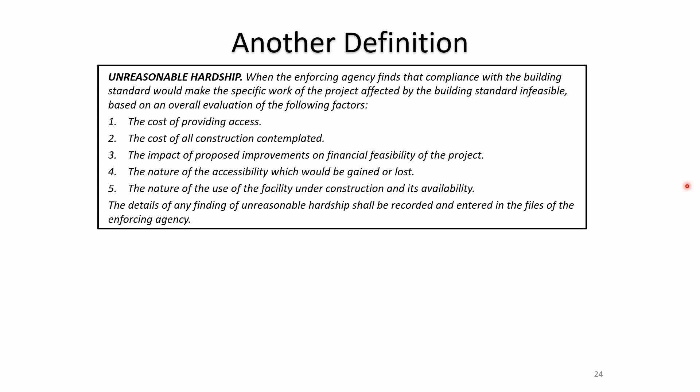Another definition is unreasonable hardship, word for word from the code. When the enforcing agency finds that compliance with the building standard would make the specific work of the project affected by the building standard infeasible, based on the following factors — the cost of providing access, cost of construction, impact of proposed improvements, the nature of the accessibility gained or lost, and the nature of the use of the facility — details of any finding of unreasonable hardship shall be recorded and entered in the files of the enforcing agency.